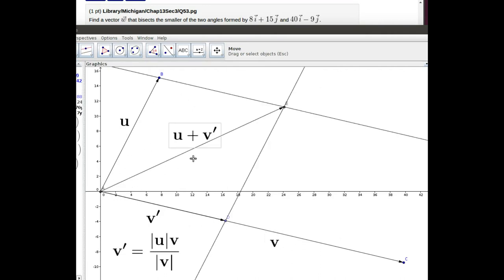Then the vector u plus v prime, there's a parallelogram law for adding those because u and v prime are the same length. Then u plus v prime is going to bisect that angle between the two of them.